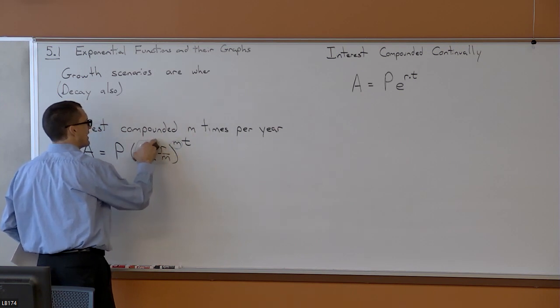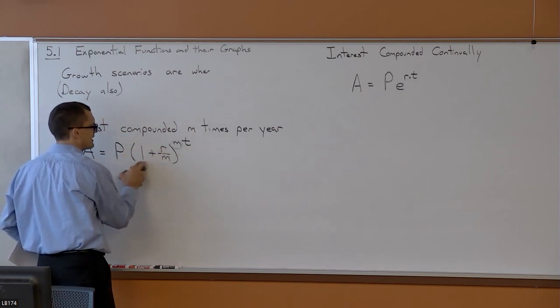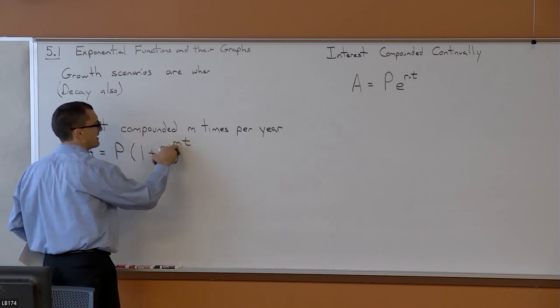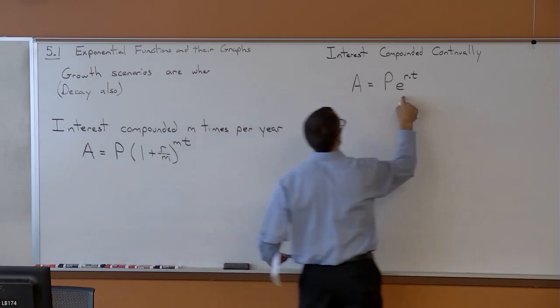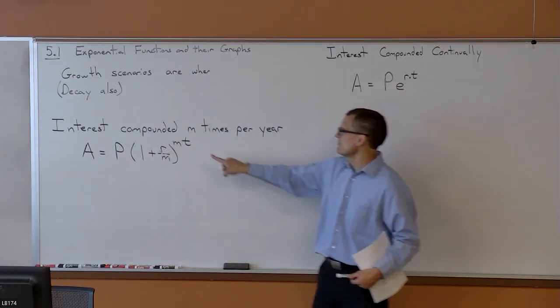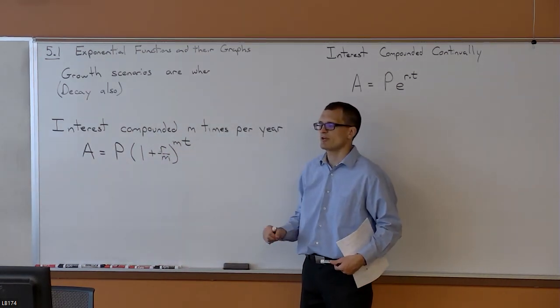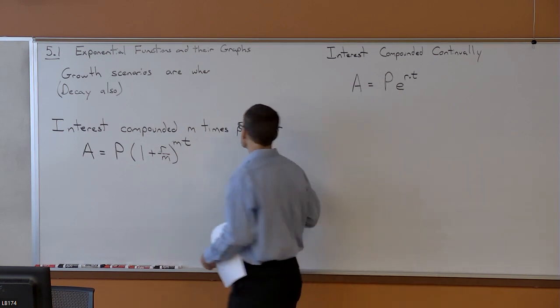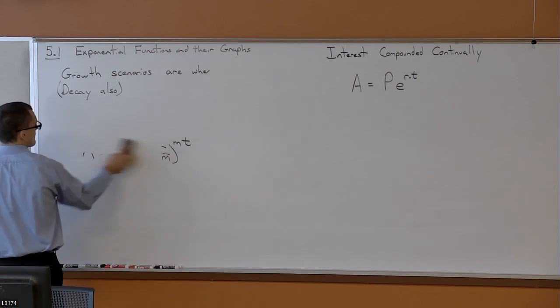By the way, read carefully when you're doing these problems. If it says compounding continuously, we're in this formula. If it says compounding M times per year, we're using this formula. But let's do an example.